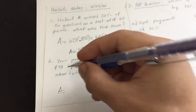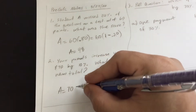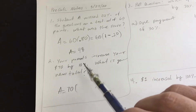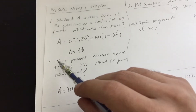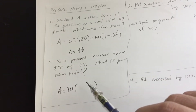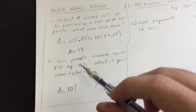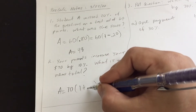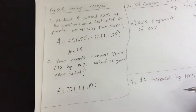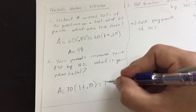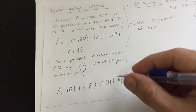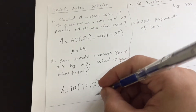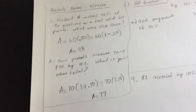Let A equal the amount, and your beginning amount was $70. What's 100% of your total? It must be 70. Is it increasing or decreasing? Increasing by 10%. So we have 100% plus 10% more — that's 70 times 1.10. This means an increase of 10%. Your new amount at the end of the day is $77.